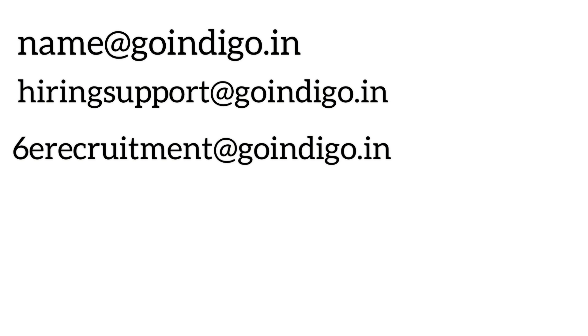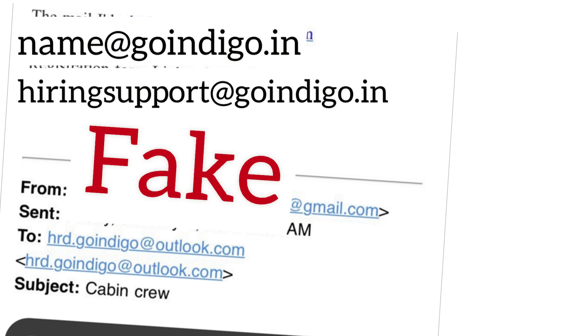Now I will show you an example of what some fraudsters write. In one fake email, they have written goindigo.in but the actual sender is @outlook.com. So they've very smartly used the goindigo.in name in the display, but it is actually coming from an Outlook address. This is not an authentic email.